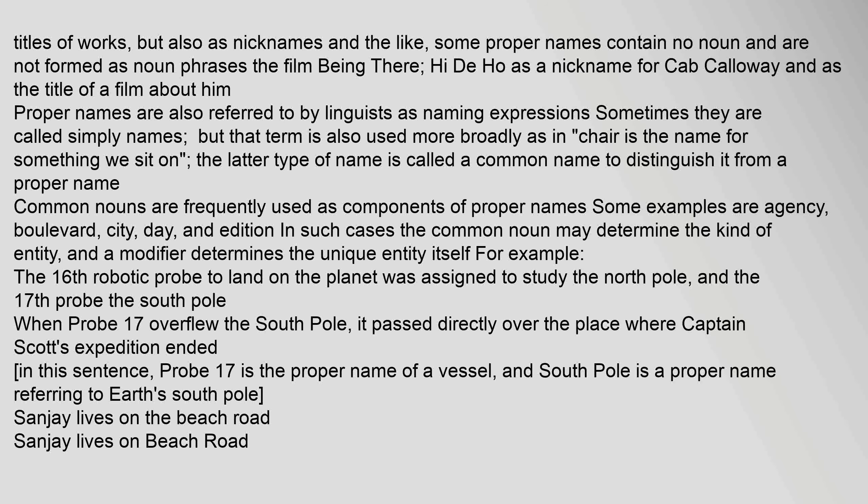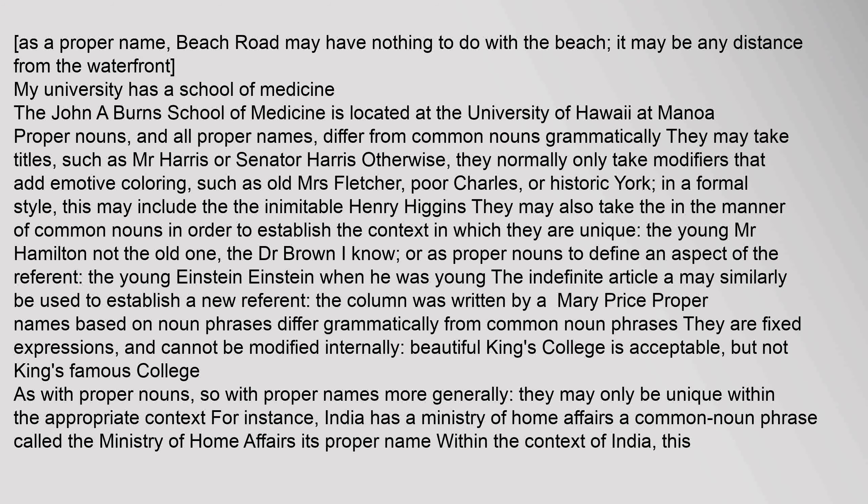Common nouns are frequently used as components of proper names. Some examples are Agency, Boulevard, City, Day, and addition. In such cases the common noun may determine the kind of entity, and a modifier determines the unique entity itself. For example, the 16th robotic probe to land on the planet was assigned to study the North Pole, and the 17th probe the South Pole. When probe 17 overflew the South Pole, it passed directly over the place where Captain Scott's expedition ended. In this sentence, probe 17 is the proper name of a vessel, and South Pole is a proper name referring to Earth's South Pole.